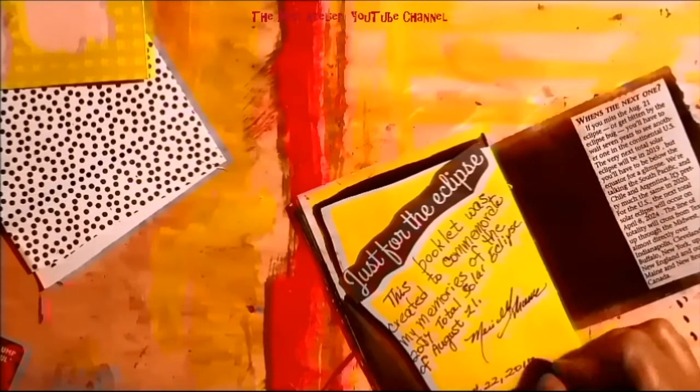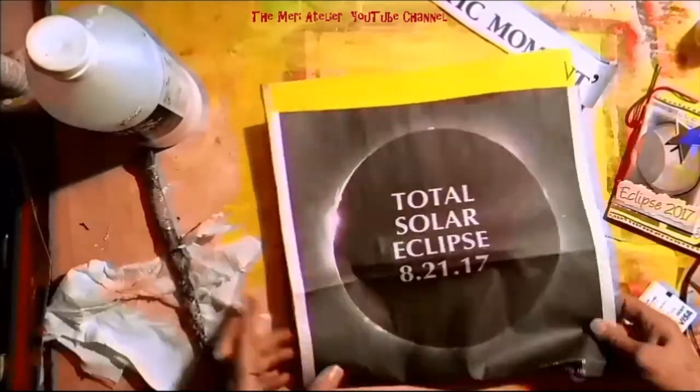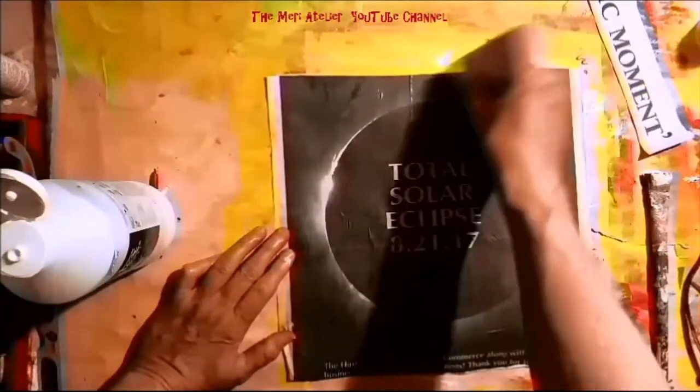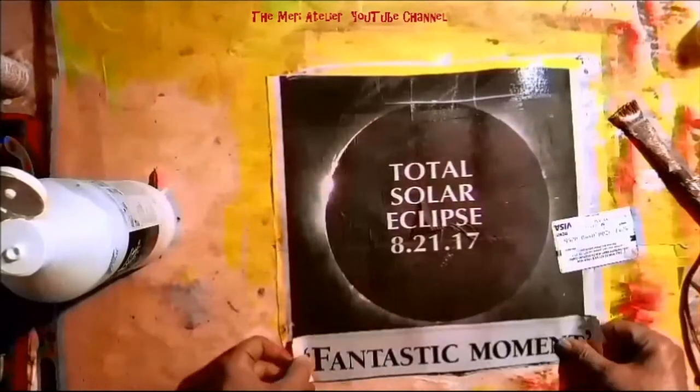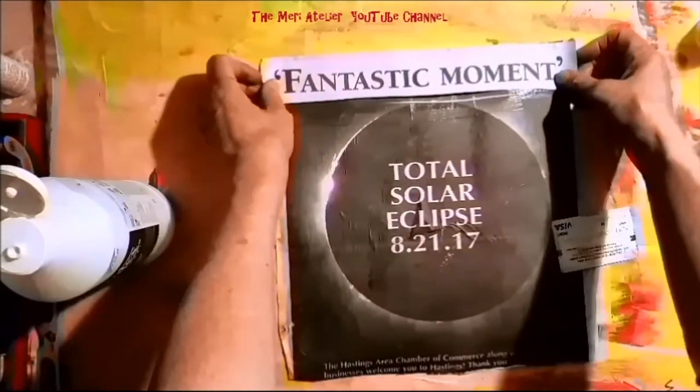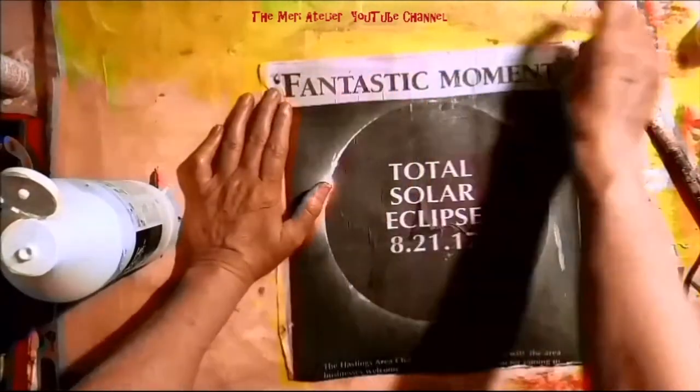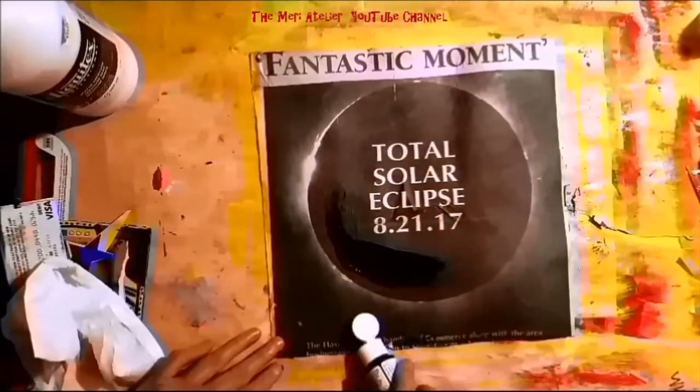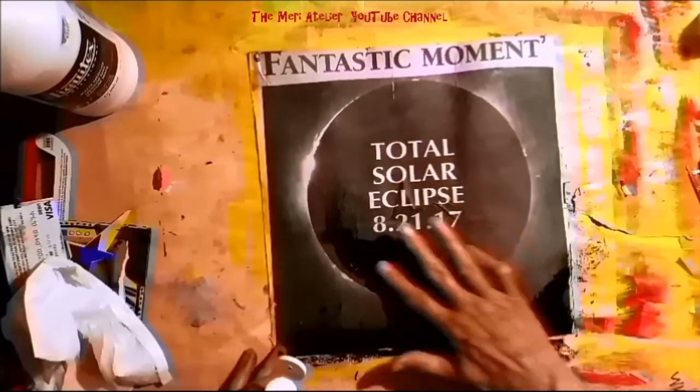And now I'm creating a 12x12 art journal page. This was from the front page of our local newspaper. Fantastic moment. Two days they had front page news on the eclipse. It was really fun to save these. I'm collaging them down using Liquitex Matte Medium. Here I'm trimming the page off. I add a little black around the border to close it in and just to enhance the page.